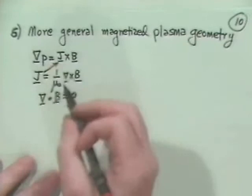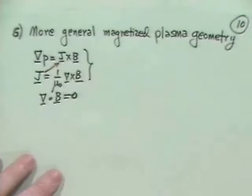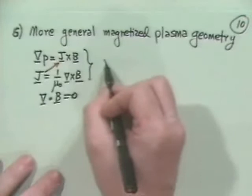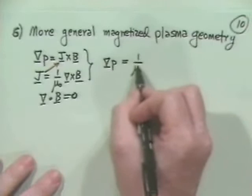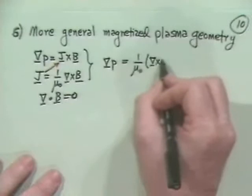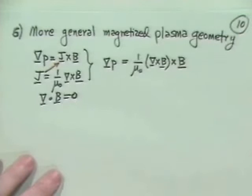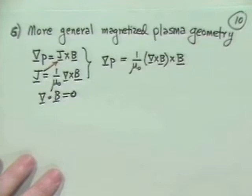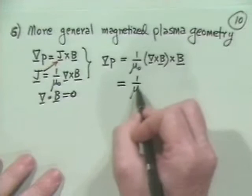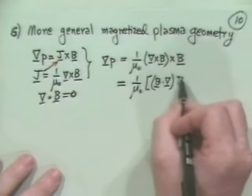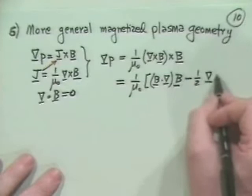We can imagine getting a rather general relation if we take J equals curl B and substitute it into grad P equals J cross B. If we do that, what we get is that grad P equals 1 over mu naught times curl of B crossed with B.